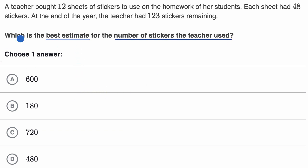Let's see if we can do that. We have 12 sheets of stickers and each sheet had 48 stickers, 48 stickers per sheet. So how many stickers did the teacher start off with? Well, there were 12 sheets times the number of stickers per sheet, so times 48. 12 times 48. This is going to be the number that they started off with, the number to start.